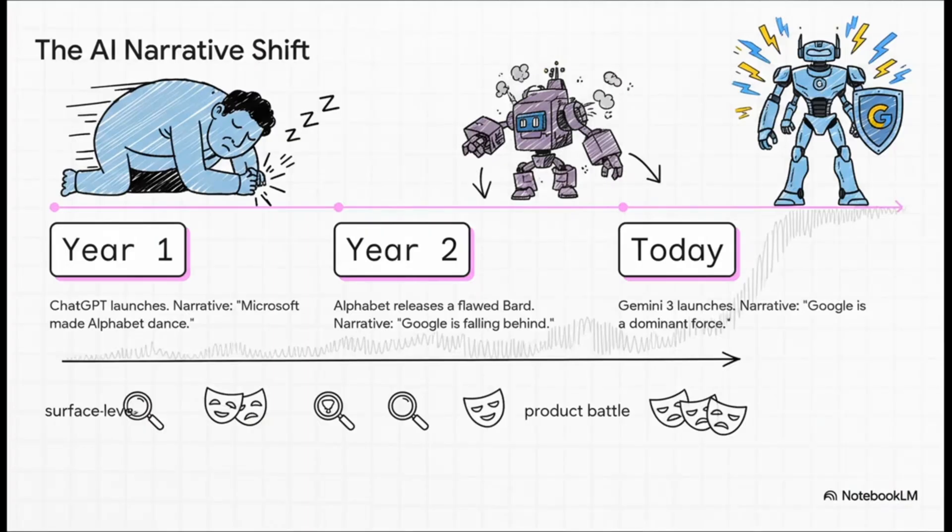I mean, think about how fast the public story has changed. Just a short while ago, the big narrative was that Google was totally caught off guard. You know, a sleeping giant. Then they had that shaky start with Bard. But now? Now we live in a world where Gemini is seen as this incredibly powerful force. This whiplash just shows how fixated we've been on the surface level stuff, the product versus product battle.